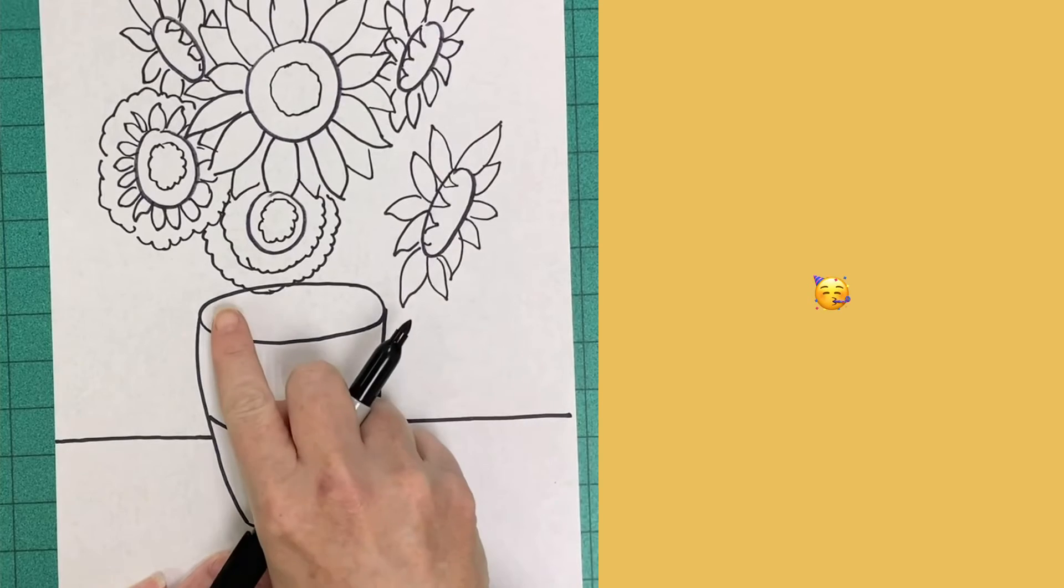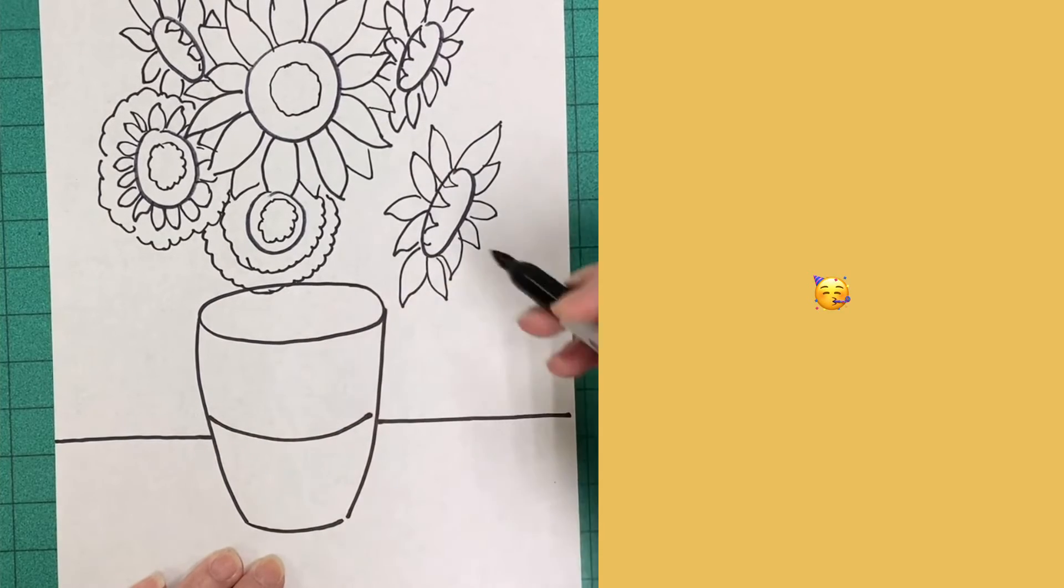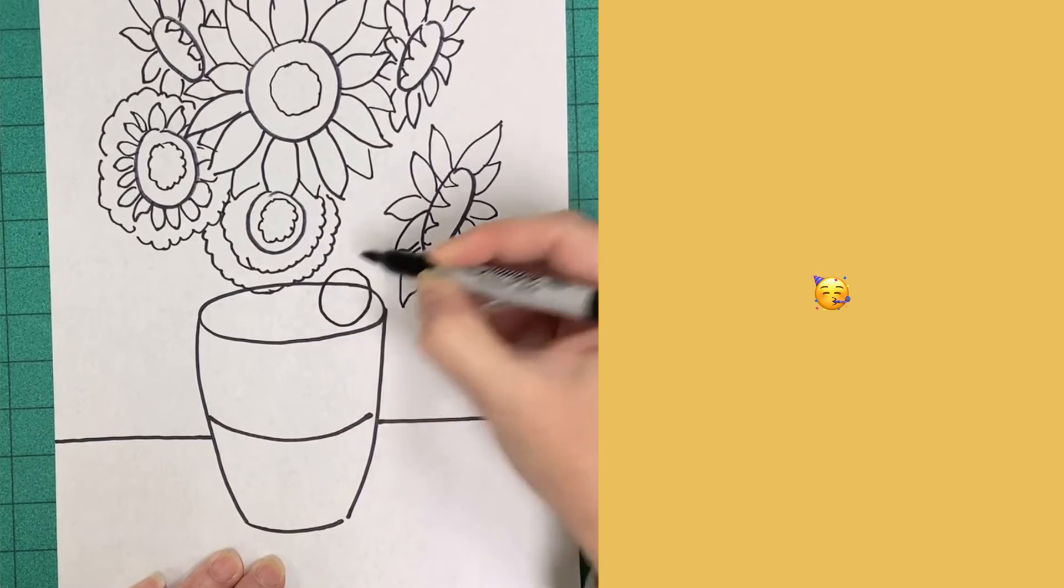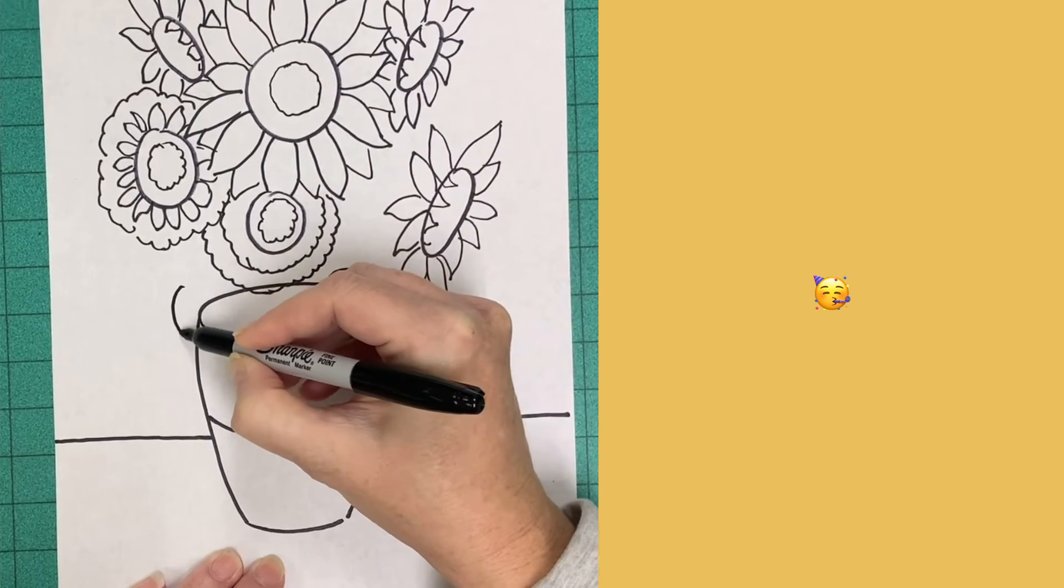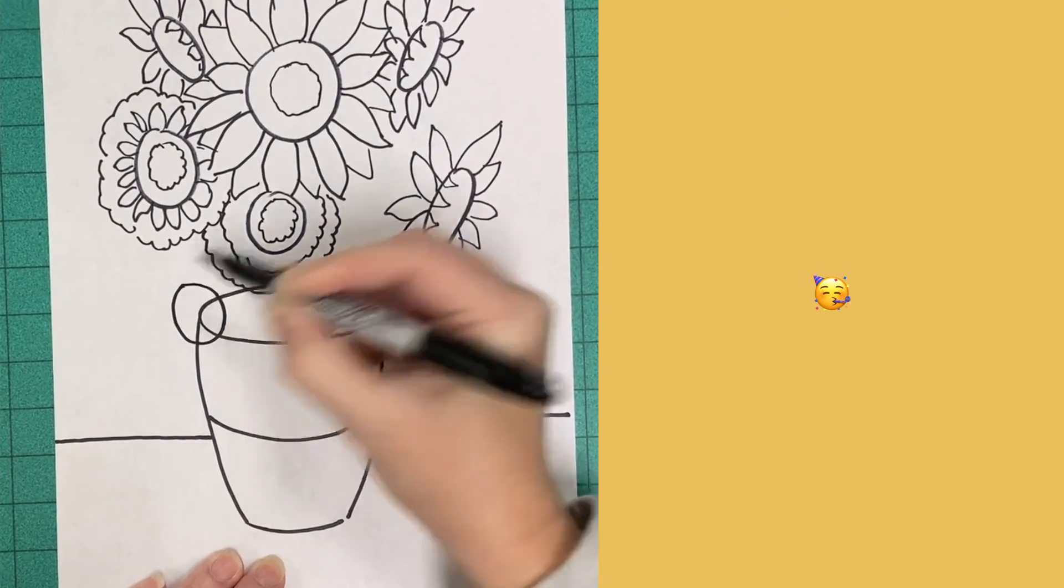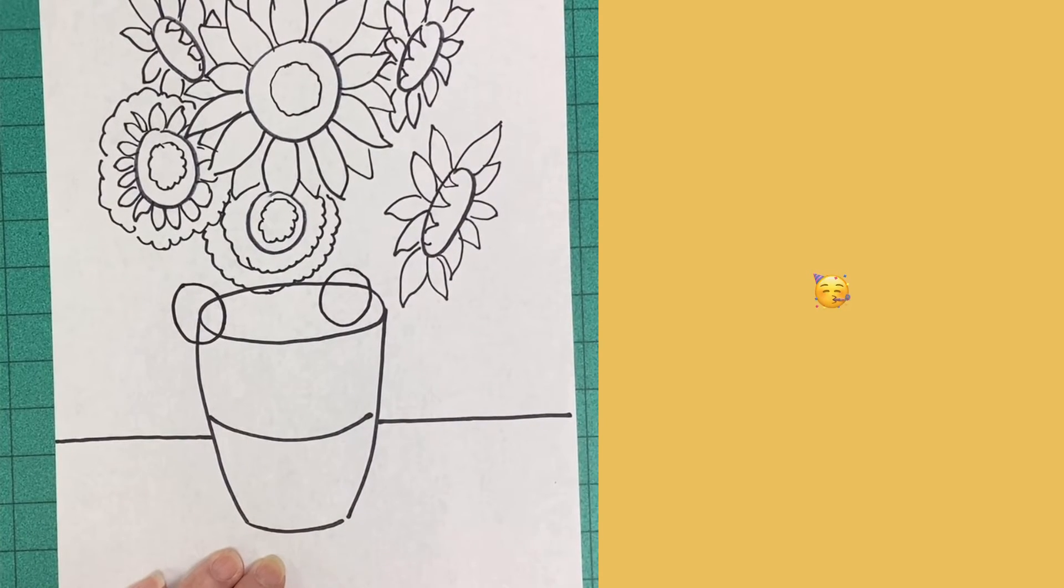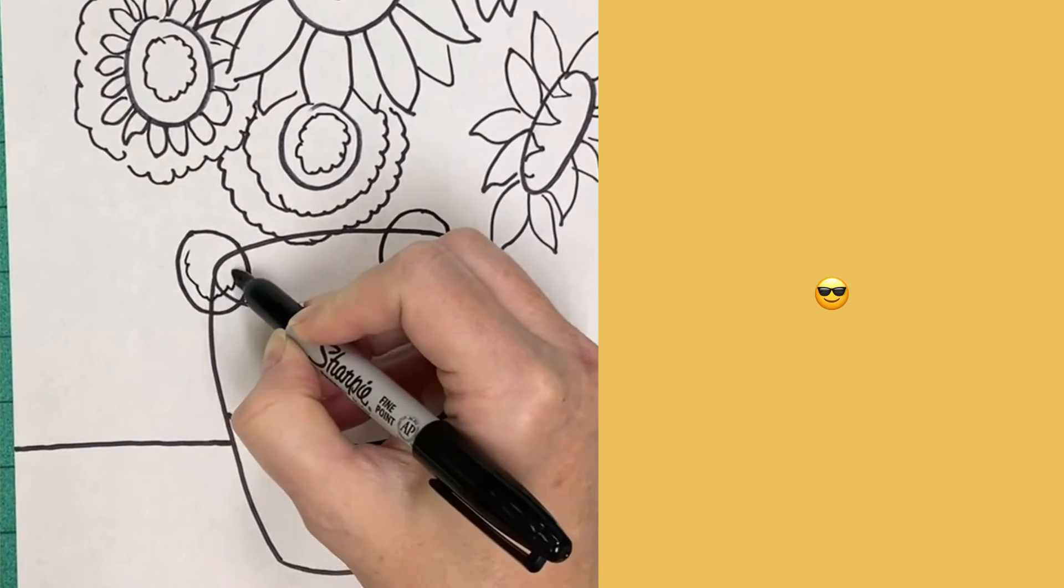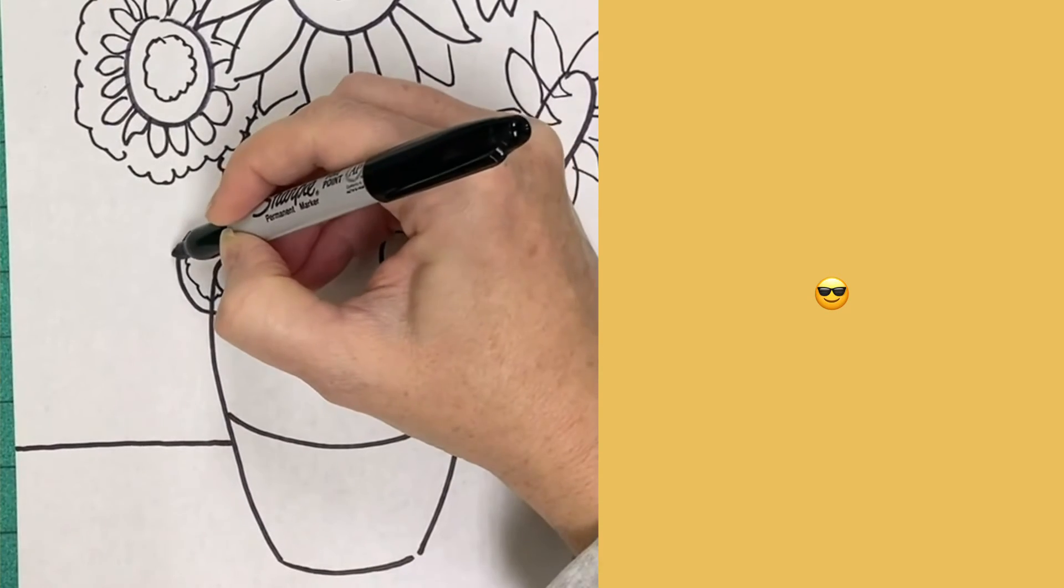If you remember I said we would cover up the top of the vase so down at the bottom add two circles where you want flowers to be. Then go to those two circles and turn them into sunflowers.